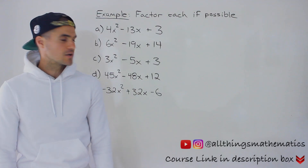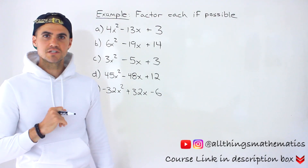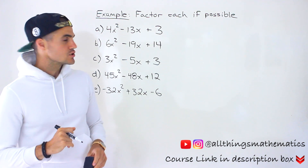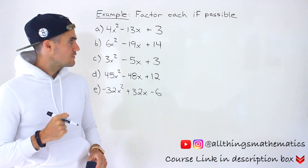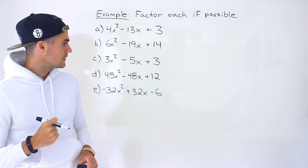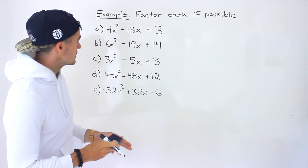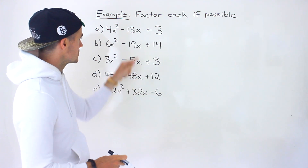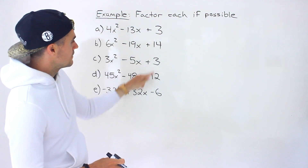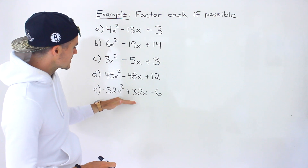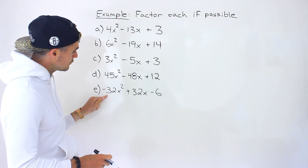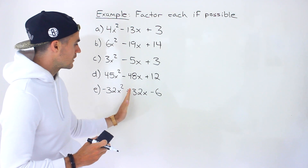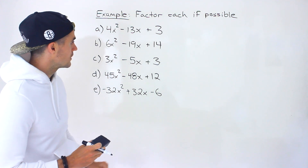Welcome back. Patrick here, moving on with another video dealing with factoring by decomposition — we've got to factor these quadratics. We're continuing with the case where the A value is not 1. In the previous video we handled B positive and C positive; now the B value is negative and C is positive. For the last one, we'll factor out a negative first since the leading coefficient is negative, which will make B negative and C positive.